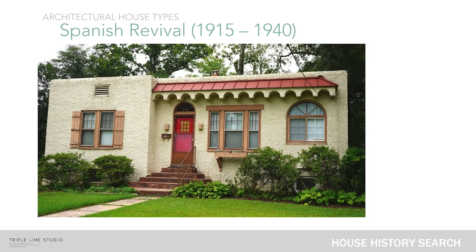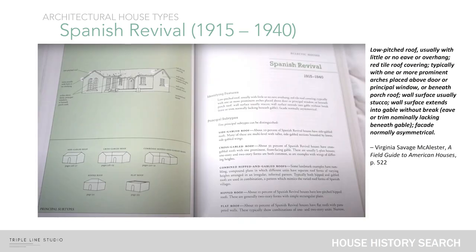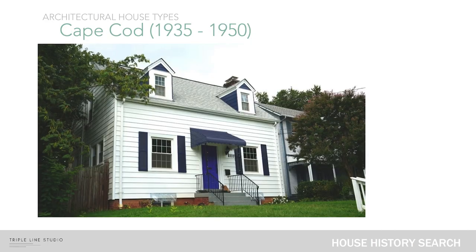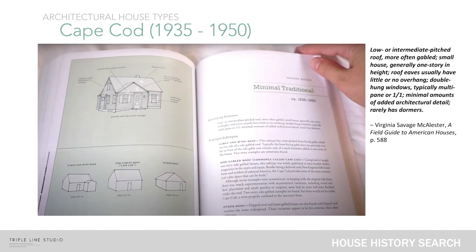Between 1915 and 1940 was the Spanish Revival architectural house type. These had low-pitched roofs — often made of red tile — which really defined their character, and the wall surfaces were made from stucco. Later, between 1935 and 1950, the Cape Cod architectural style became popular, and there are plenty of these in my neighborhood as well. The Cape Cod style falls under the minimal traditional category. These are generally one-story and come in several versions with a gable and wing roof or a side gabled roof.